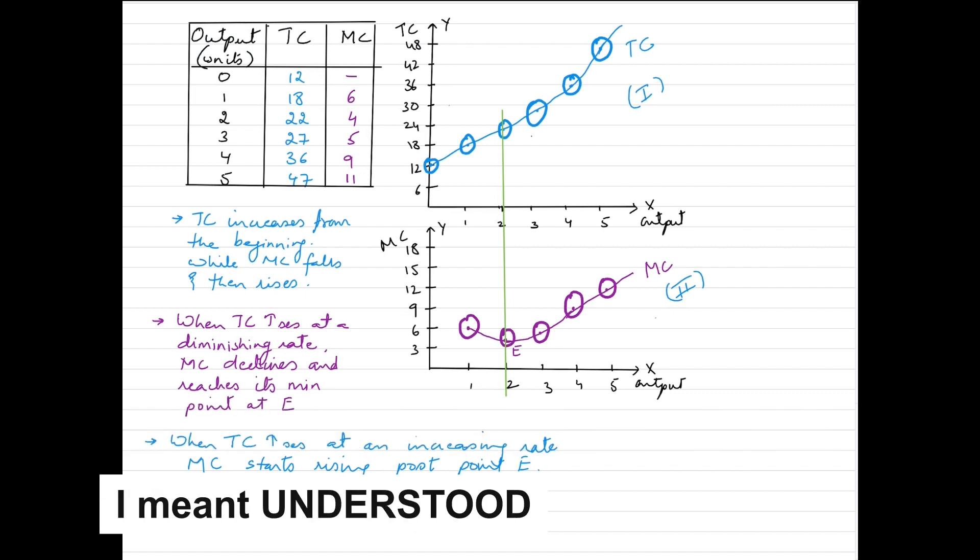When we look at the schedule, we have output listed in units going upwards from 0 to 5. Total cost also tends to move upwards from 12 to 47, and marginal cost has a weird behavior because it is falling down and then tends to rise again.